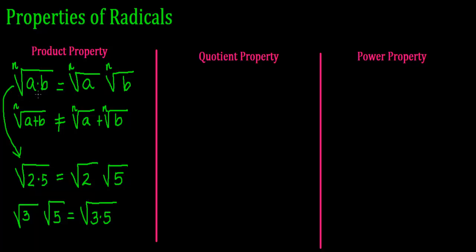the product property allows me to join those two factors inside the same radical. Here I have the root of a product equal to the product of the roots, and here I have the product of two roots equal to the root of a product. So this is equivalent.